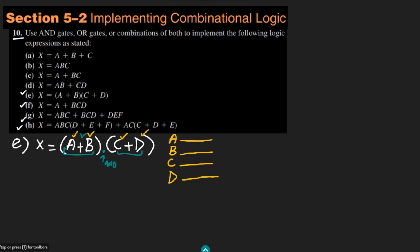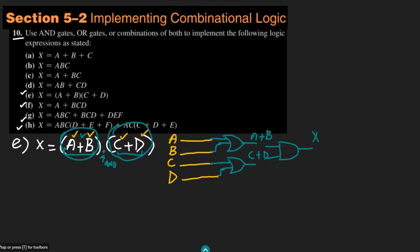We have two OR circuits: one where A and B are added, and one where C and D are added. At the end these are combined using an AND gate. Let me draw the first OR gate with two inputs A and B, giving output A plus B, and a second OR gate with inputs C and D, giving output C plus D. These are then ANDed together giving output X equal to A plus B multiplied by C plus D. That is the solution of part E.